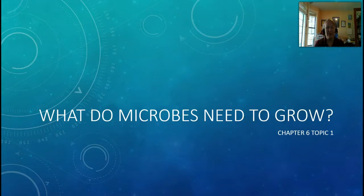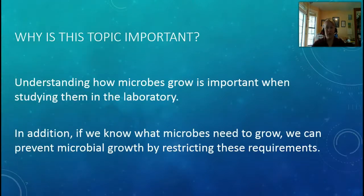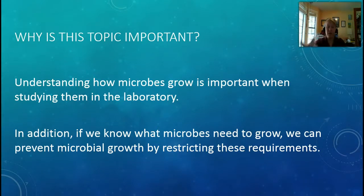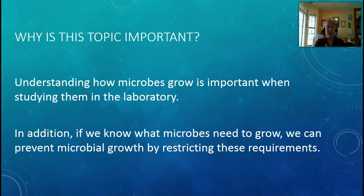We're going to start out Unit 2 with Chapter 6. In Chapter 6 we have three subtopics, and our first topic is all about what microbes need to grow. This is an underlying theme for all three topics in Chapter 6 — we need to understand what microbes need to grow in order to grow them for laboratory experiments, and to inhibit their growth in situations where we don't want it, like in a hospital room. So if we know what they need, we can either supply it or not allow them to have that.